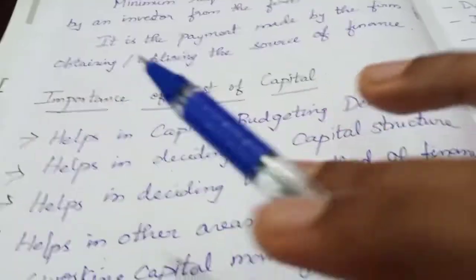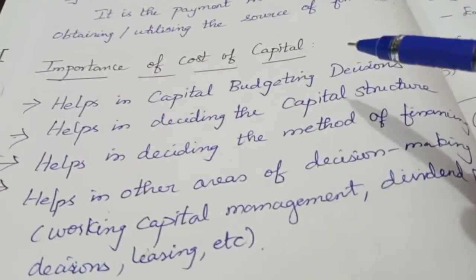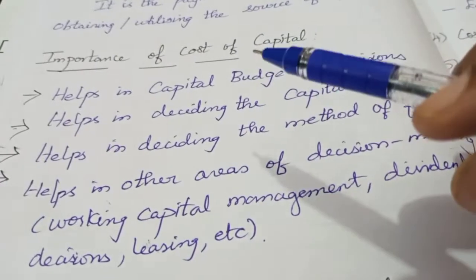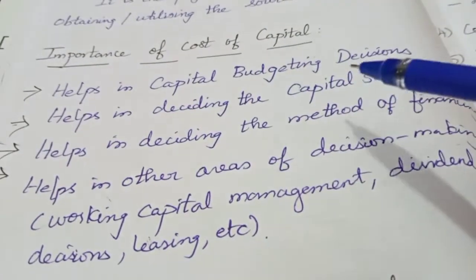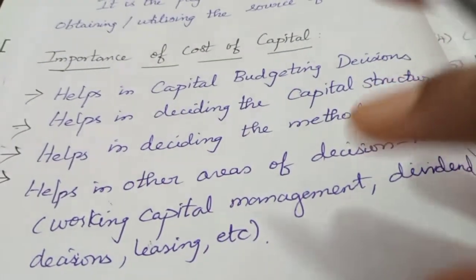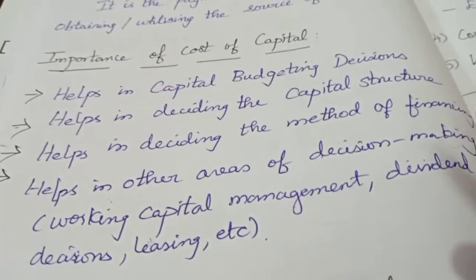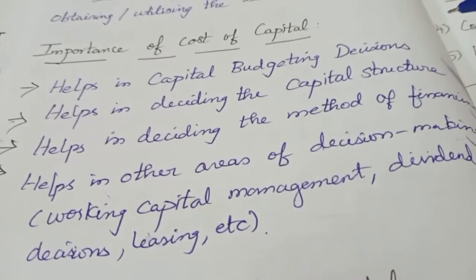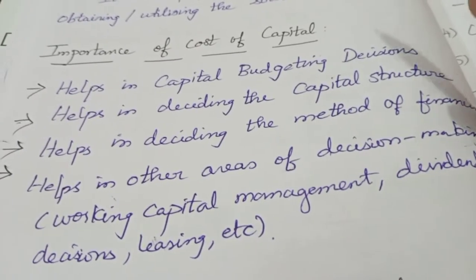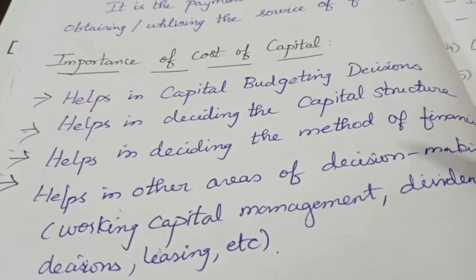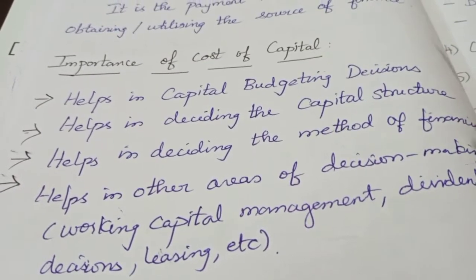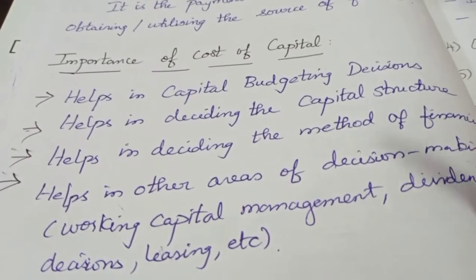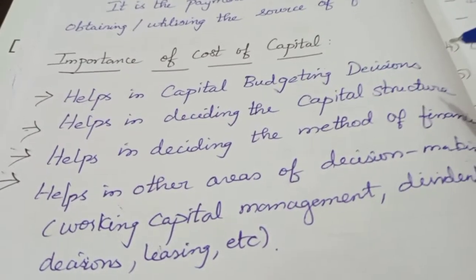The next question is the importance of cost of capital. What purpose do we consider cost of capital? It helps in deciding capital budgeting decisions. Capital budgeting decisions means investment decisions — long-term investment decisions. If you invest in a project or plant and machinery, we will evaluate investment proposals.